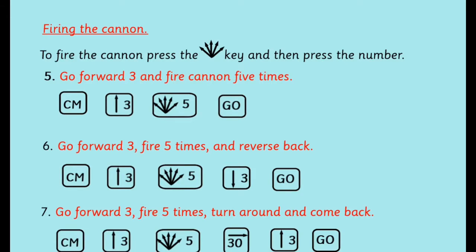Big Track has a built-in cannon, and to fire the cannon we've got to press the arrow-type key which is on the keypad, and then a number of times to fire the cannon. So this example, first example, is go forward three and fire the cannon five times. So again with clear memory, forward three, then a cannon symbol and number five, and then go.